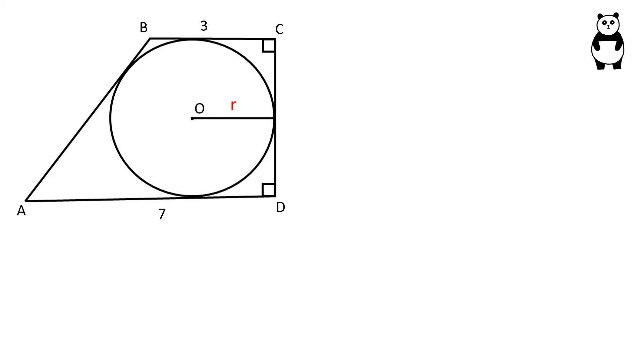Let's solve this problem. Since both yellow angles are equal to 90 degrees, BC is parallel to AD, therefore ABCD is a trapezoid. BC and AD are the bases, BC is equal to 3 and AD is equal to 7.